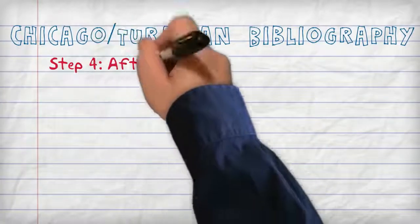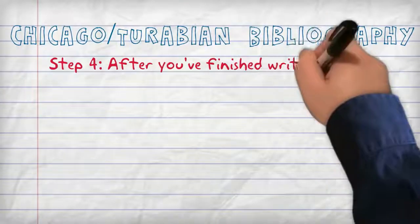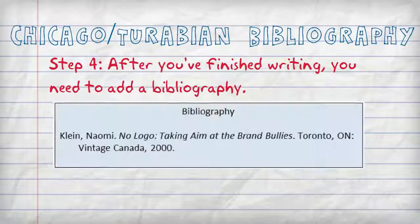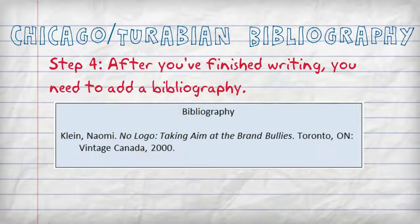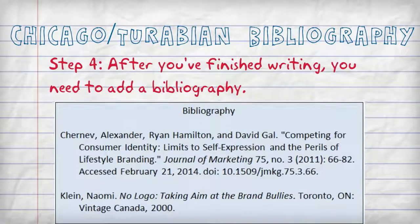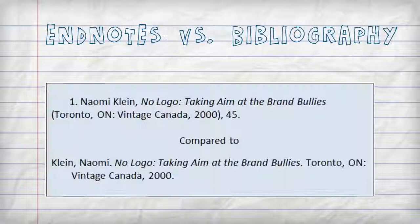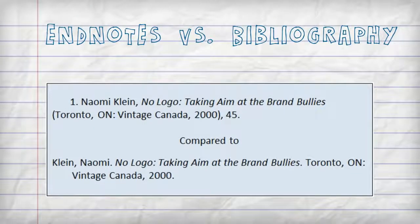Step 4. After you've finished writing, you need to add a bibliography that lists each source once. Your list will be much longer, but I'll throw in another source just to demonstrate. You probably notice there are differences between an endnote and a bibliography entry.